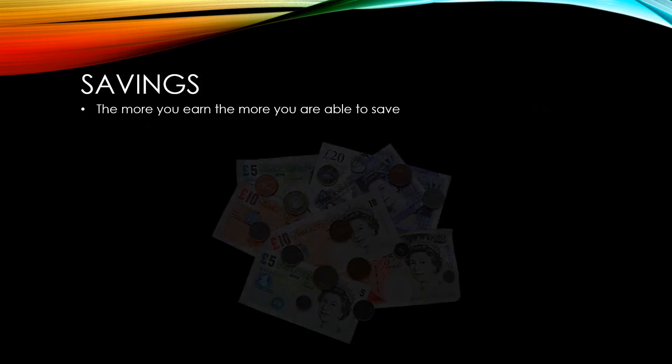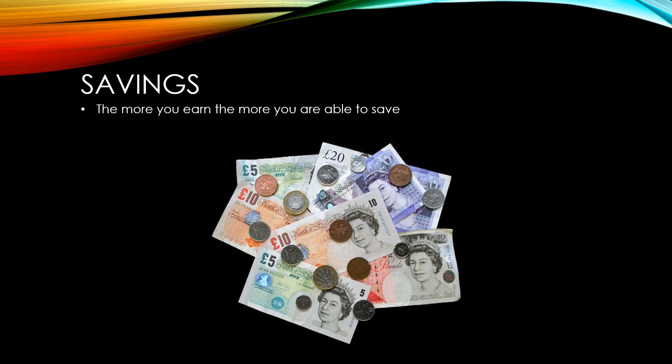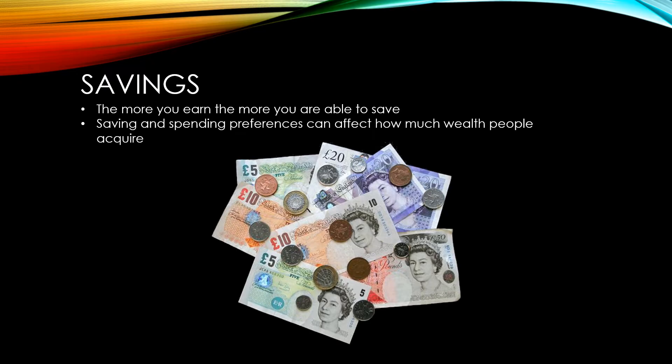The next factor is savings. It's fairly straightforward that the more you earn, the more you're likely to be able to save. People on low incomes and benefits may well find that by the time they've paid for all their essentials, they have nothing left to save. When it comes to people who have disposable income — that is some money left over after they've paid for their essentials — their saving and spending preferences will affect how much wealth they're able to acquire. Some people will spend all of their money on consumable goods, while others might save up and spend on assets for the future. Some may even take their savings and invest them into a business, and if this business turns out to be profitable, they'll have an even higher income and higher wealth in the future.